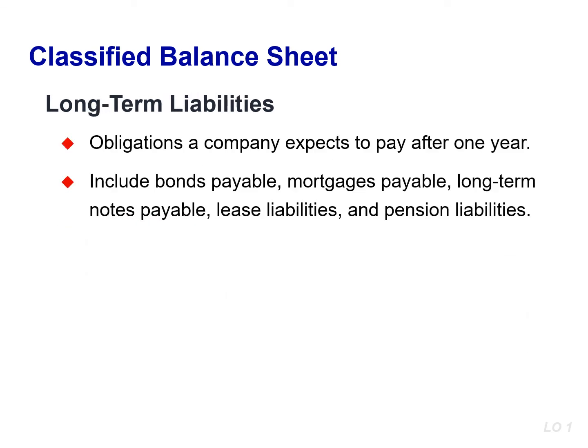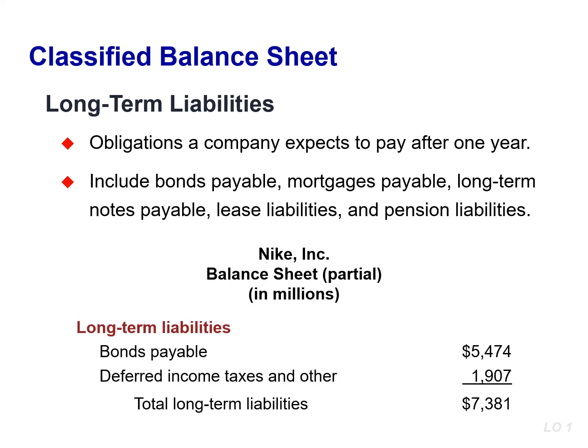Long-term liabilities are the debts and obligations that a company expects to pay after one year. Liabilities in this category include bonds payable, mortgage payable, long-term notes payable, lease liabilities, and pension liabilities. Most companies report long-term debt maturing after one year as a single amount on the balance sheet and show details in the accompanying notes. Nike reported a little over $7.38 million of long-term liabilities in its balance sheet in a recent year.